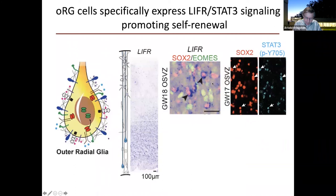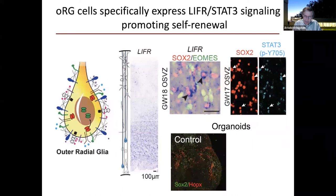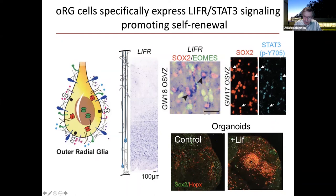We wondered if we could activate self-renewal of these outer radial glial cells in organoids. Although some HOPX-positive outer radial glial cells do emerge in organoids, they appear in much fewer numbers than in normally developing brain. We treated organoids with LIF — leukemia inhibitory factor — to activate the LIF-R/STAT3 pathway. After two weeks, we had a much larger population of HOPX-positive outer radial glial cells. By increasing these progenitors, we achieved higher numbers and greater diversity of excitatory neurons, especially in the upper cortical layers as the organoids matured.